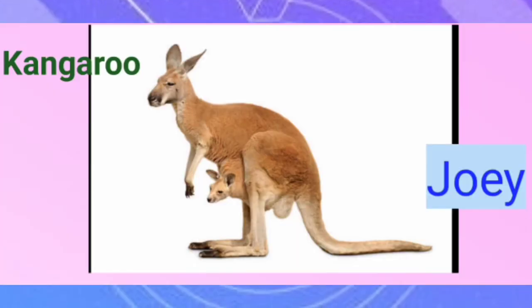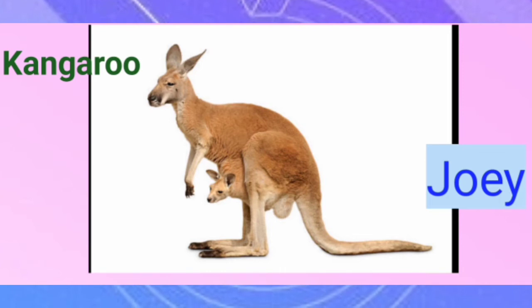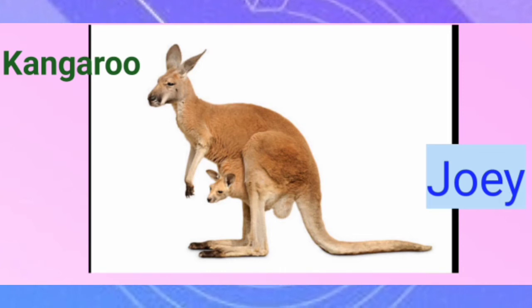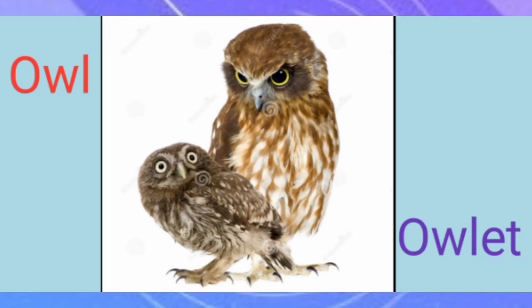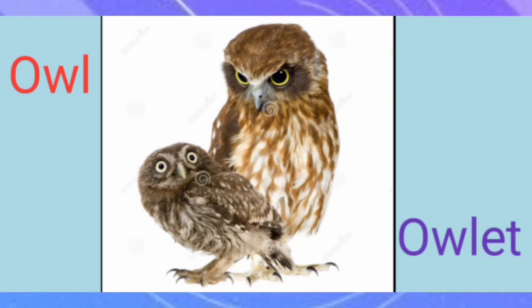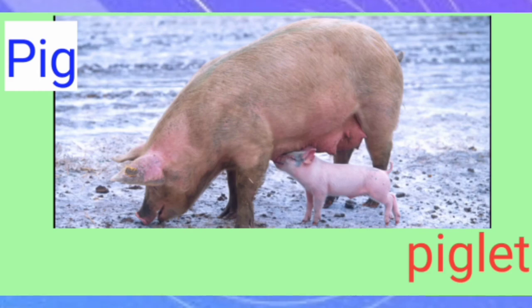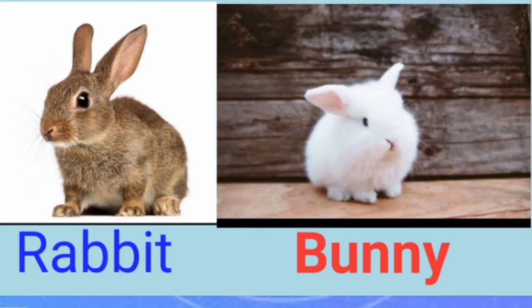The baby of kangaroo is joey. The baby of lion is cub. The baby of owl is owlet. The baby of pig is piglet. The baby of rabbit is bunny.